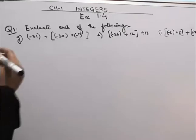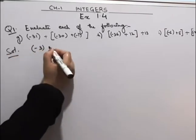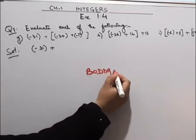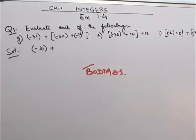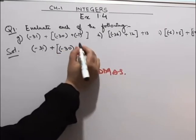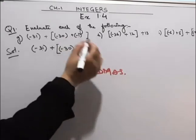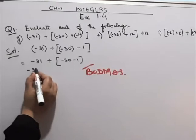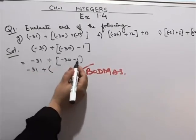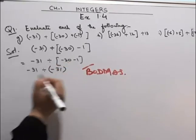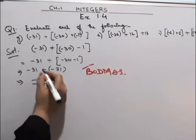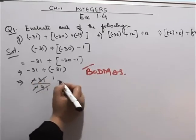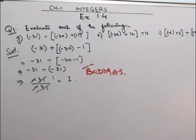Now the G part is minus 31 divided by minus 30 plus minus 1. We'll solve the bracket first, BODMAS rule. First we'll solve the bracket. This will be minus 31, plus minus is minus, minus 1. This will be minus 31 divided by, minus 30 and minus 1 will be added, 30 plus 1 is 31, minus sign will apply. This will be 31 divided by minus 31. 31 will cancel with 31, we get 1. Minus will cancel with minus. So we'll get the answer as 1. The answer of the G part is 1.